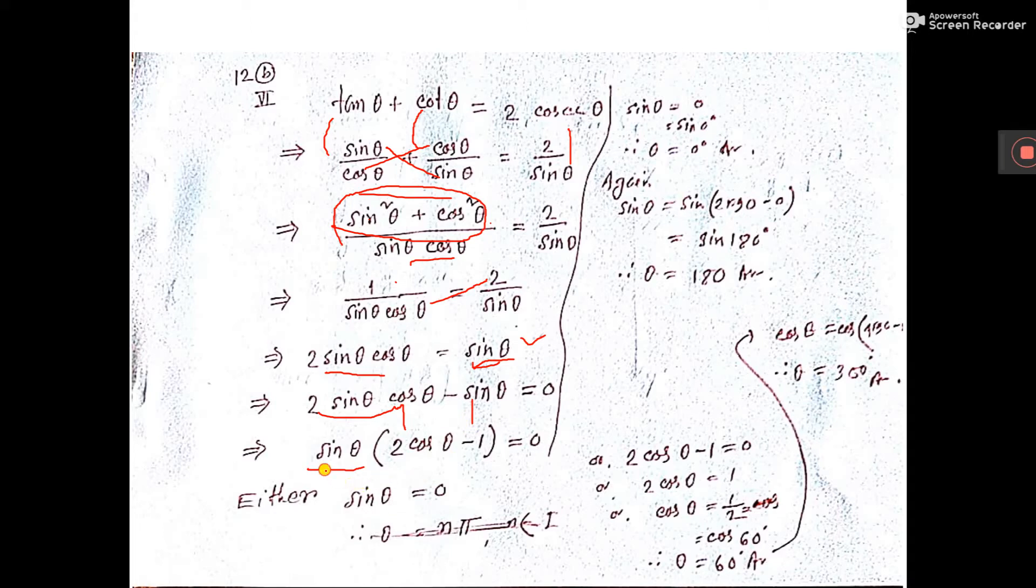Now do either or. Either sin theta equal to 0 or 2 cos theta minus 1 equal to 0.